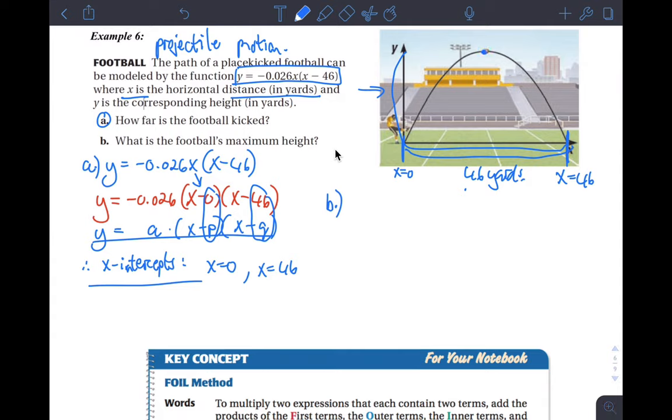Letter b: what's the football's maximum height? In other words, what's this distance right here? But that's the same as finding the y coordinate of the vertex because the y coordinate is the max. So how do I find that? Well, I know that if this is 46 yards, and for this formula, which is intercept form, to find the x coordinate of the vertex or the axis of symmetry, which is this line right here, we have a formula and that formula is x equals (p + q) / 2.